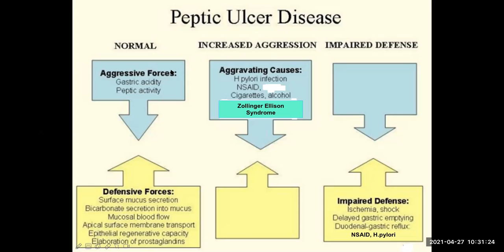The take-home message: there must be a clear-cut imbalance between the attacking force and the defensive force. Sometimes both things occur together. Even in gastric ulcer, if there is no acid, there is no ulcer. But in duodenal ulcer, the attacking force is more powerful than the defensive one, whereas in gastric ulcer, the attacking force is present but weakening of the defensive force is more important.